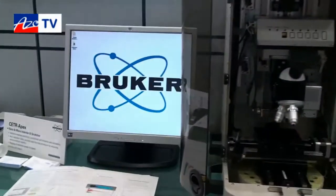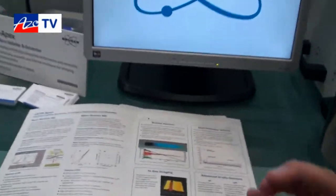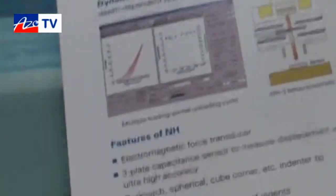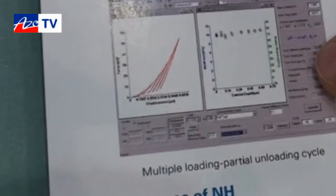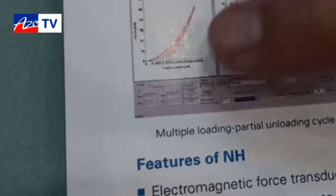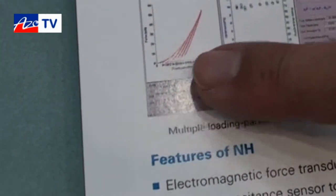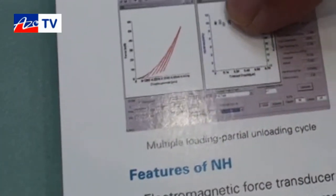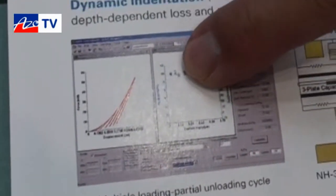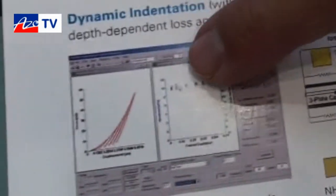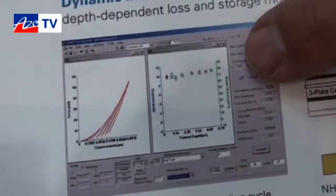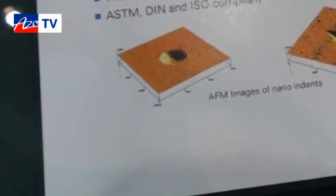With the software, once we do the indentation, the software creates a chart where you can see many indentations at different load levels. At each indentation level there is a marking where it produces the hardness and the Young's modulus at that indentation level for the material.